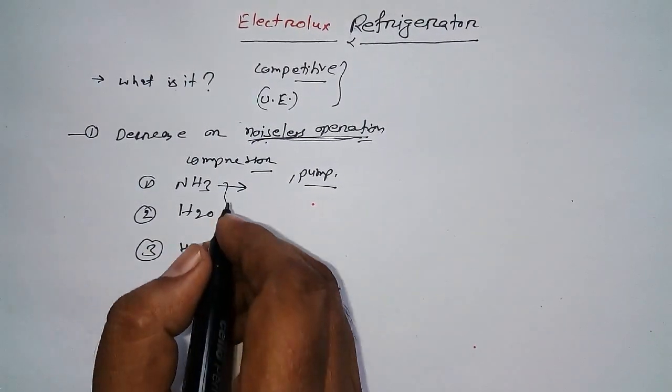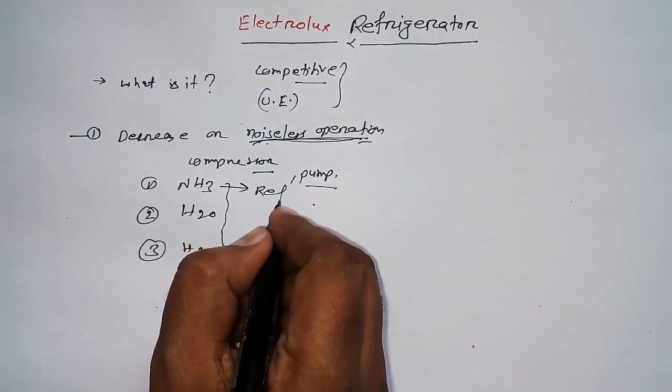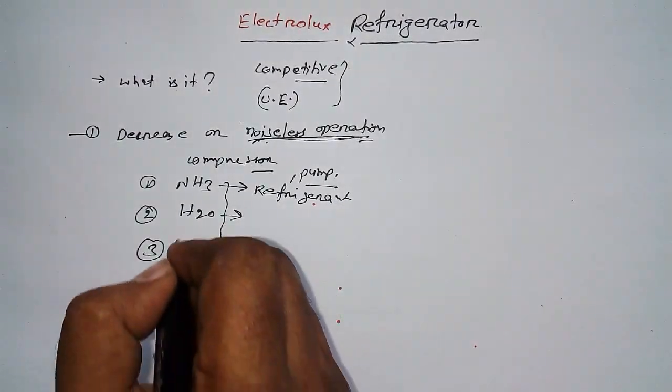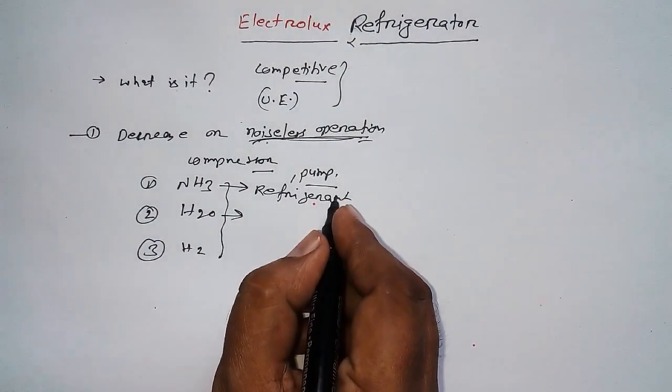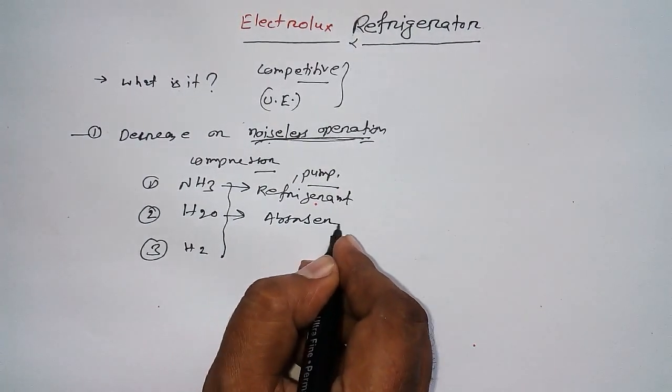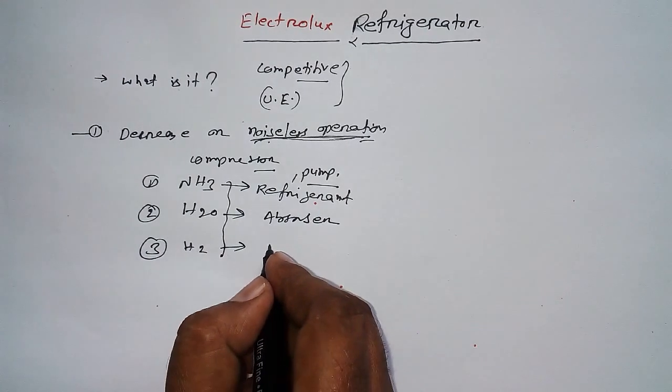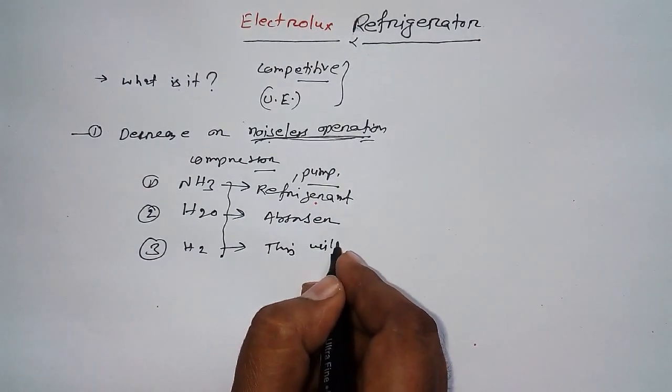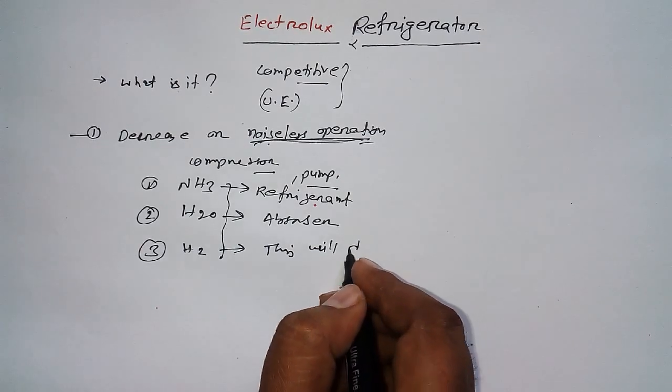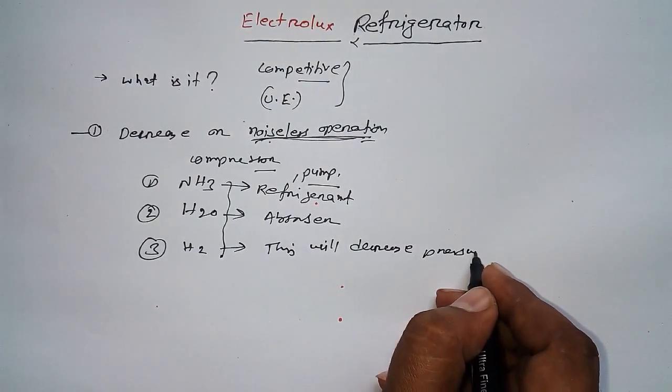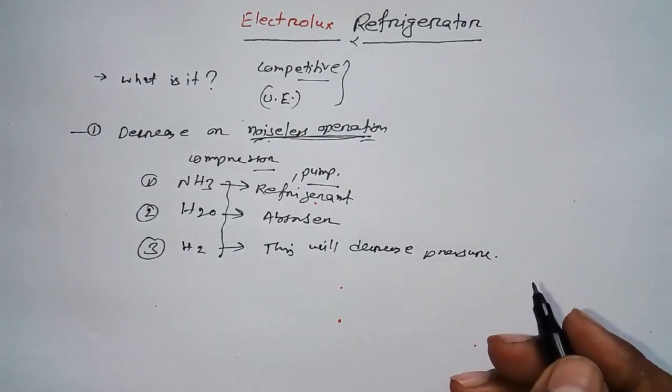Ammonia (NH3) will be used as refrigerant. H2O will act as absorber. This H2O fluid system will decrease pressure.